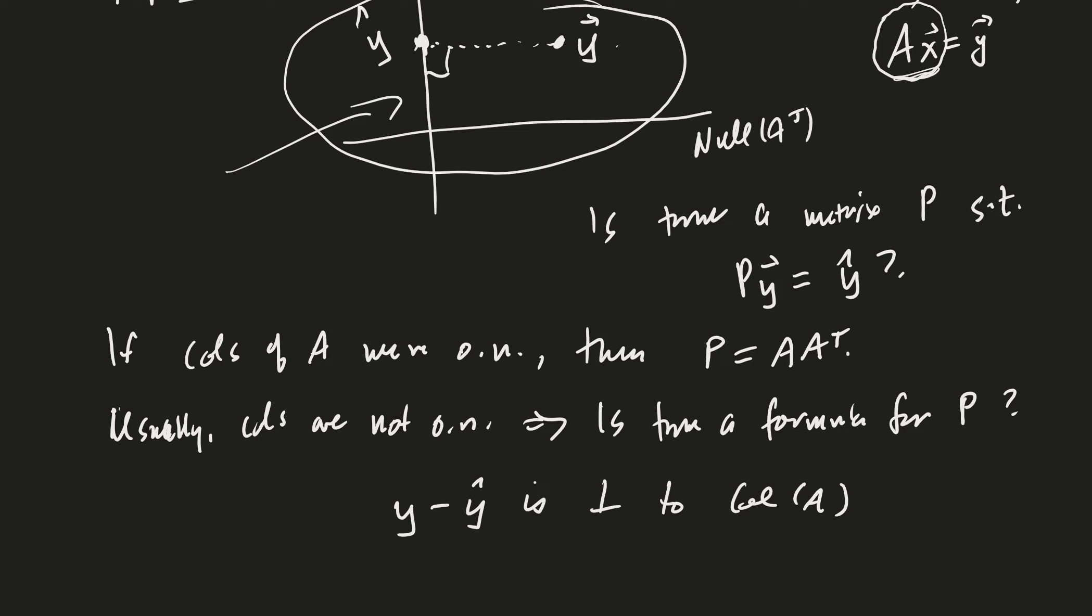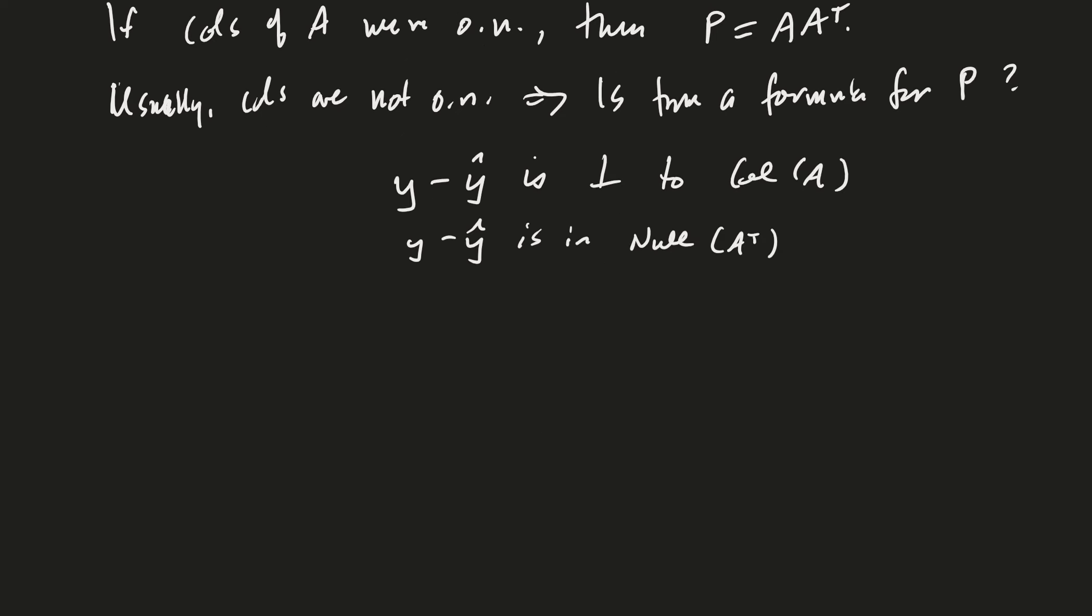What does that mean? That means that Y minus Y hat is in the null space of A transpose. What does that mean? That means that A transpose times Y minus Y hat. By the way, I just realized my notes have the Y hat first. So, let me go ahead and reverse that. It doesn't matter which one you do. Y hat minus Y is equal to zero. Good. Now, because Y hat is in the column space of A, there exists, is everybody familiar with that backwards E? That says there exists an X such that A times X is equal to Y hat. Right? That's almost by the definition of being in the column space. X is some linear combination of the columns of A will give you Y hat.